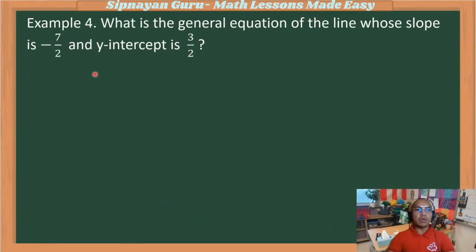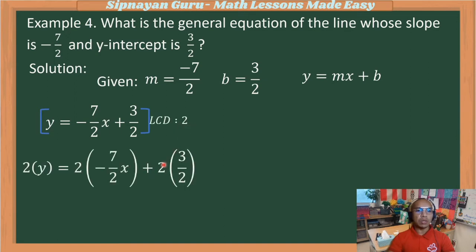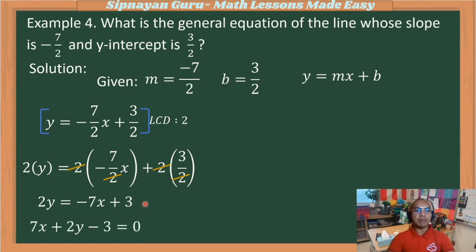Example 4: What is the general equation of the line whose slope is negative 7 over 2 and y-intercept is 3 halves? Substituting into slope-intercept form and multiplying by LCD of 2 gives 2y equals negative 7x plus 3. Transposing gives 7x plus 2y minus 3 equals 0, which is the general form.